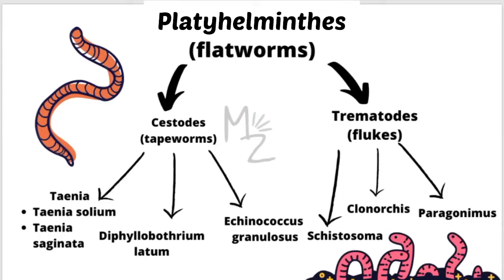In upcoming videos we'll talk about taenia. This is a type of tapeworm which includes taenia solium and taenia saginata. Another type of tapeworm is diphyllobothrium latum. We'll discuss this in upcoming videos. And the third one is echinococcus granulosus.